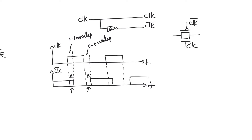Now, because there is delay, clock and clock bar are sometimes not going to be inverses of each other, but will be equal to each other — specifically during the 1-1 overlap and the 0-0 overlap periods.